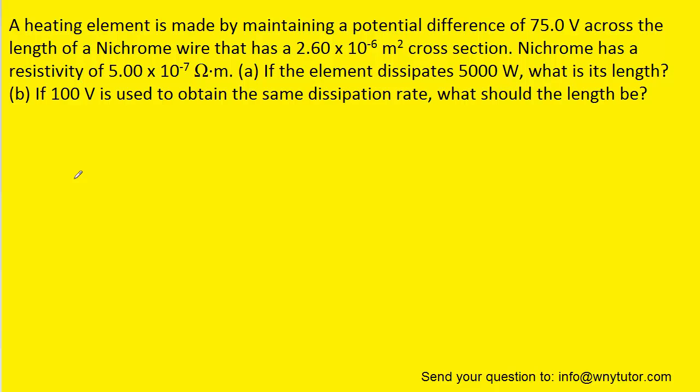We know that the resistance of a conducting wire takes on the following equation. We have the resistivity ρ multiplied by the length of the wire divided by the cross-sectional area.